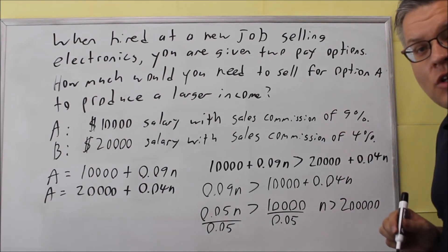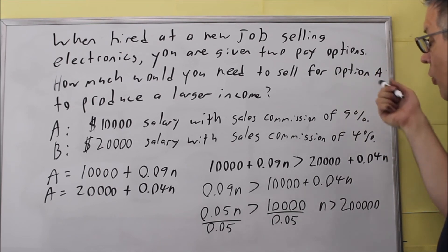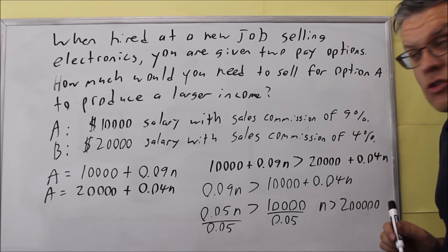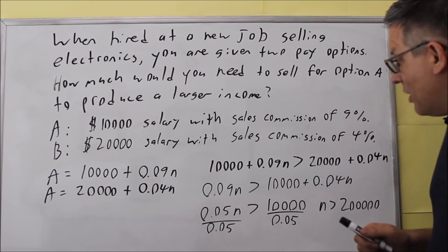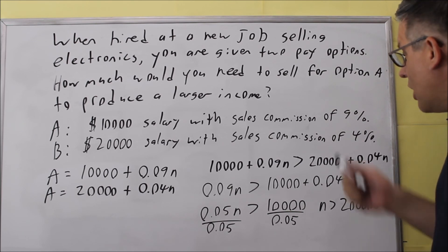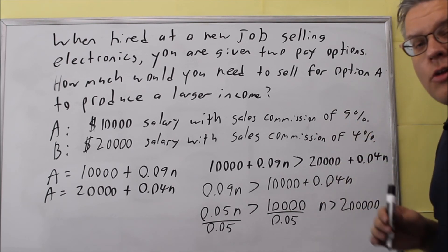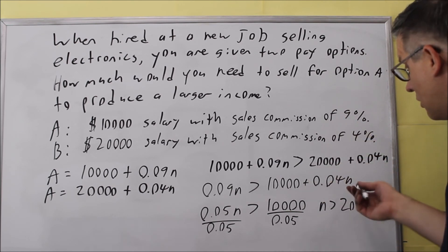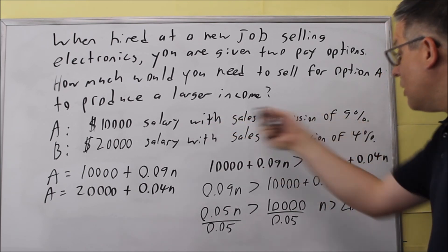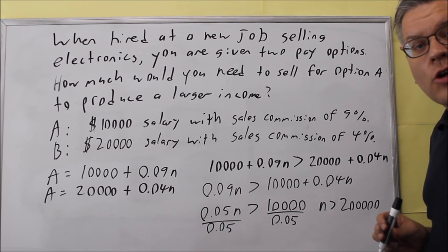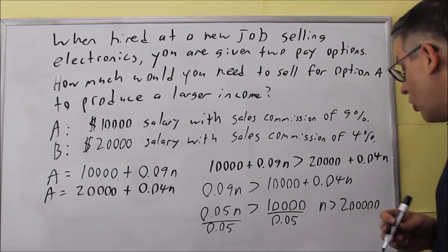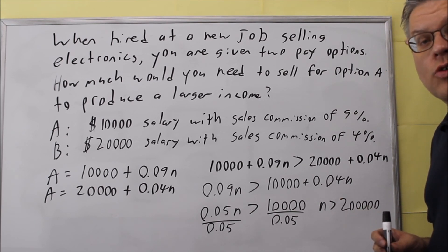So the only way that A is going to be a better option for you is if you believe you can sell more than $200,000 worth for the whole year of electronics. Then option A would be better for you because you'll make more. If you don't think you're going to sell more than that, then it's probably better to take the second option instead. In order for option A to be larger than option B, you'd have to sell more than $200,000 worth of electronics.